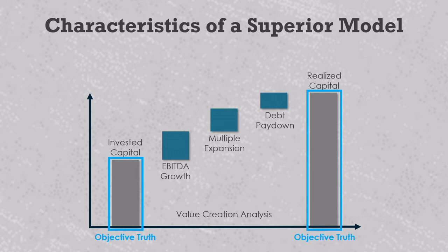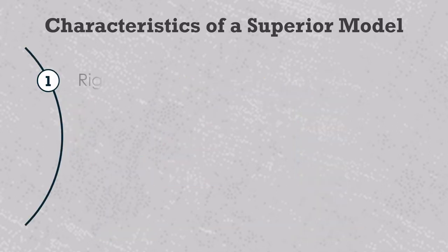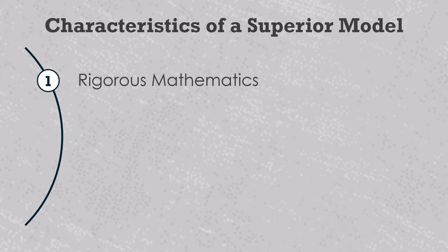Total value creation must also be objectively true because it's simply the difference between two objectively true things. In contrast, the way that value creation gets split up is always a subjective interpretation. Different approaches and different assumptions can provide different results. In these videos, I'll argue that even though every value bridge is subjective, some subjective interpretations are objectively better than others, and the criteria for what makes a model objectively superior will be as follows. First, a value bridge is objectively better if it uses rigorous math — meaning you can derive all the equations from the bottom up using basic algebra, calculus, and widely accepted capital structure, valuation, and P&L relationships. You don't need plugs or shortcuts to make the value drivers add up to the right number, and you can break the value drivers into smaller pieces and add them back up again without any loss of data integrity.